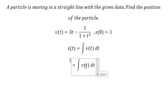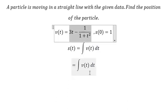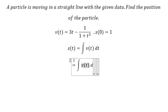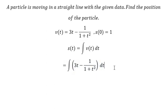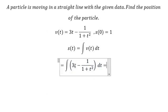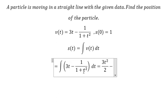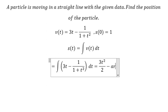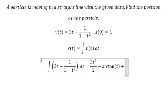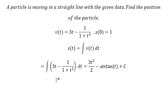So we put vt in here. The integration of this is 3t squared over 2, this one is arctan of t, and I will put C. Now we have the conditions.